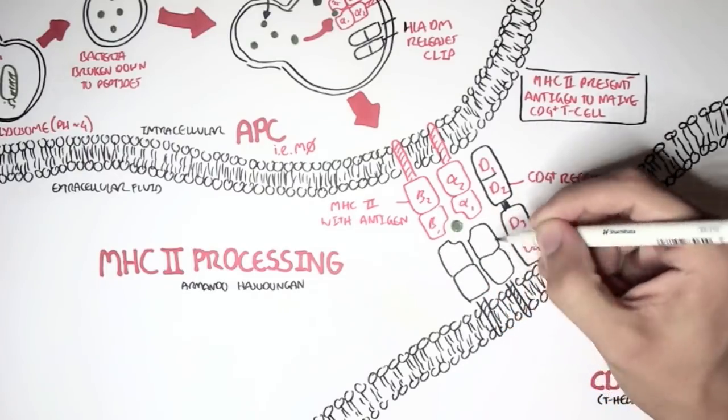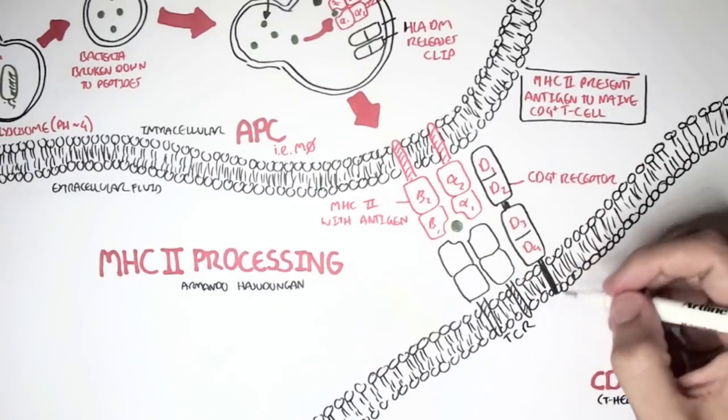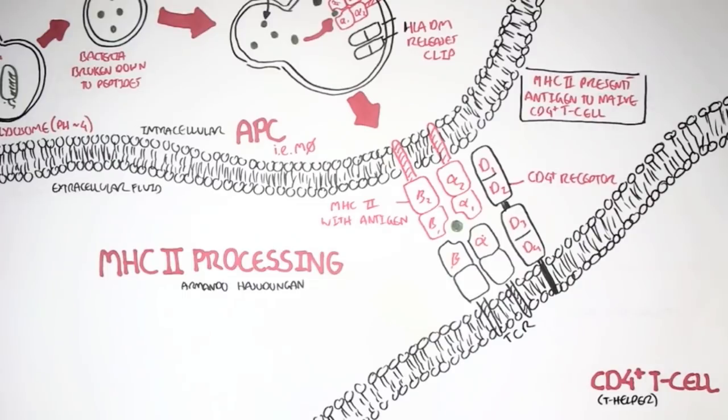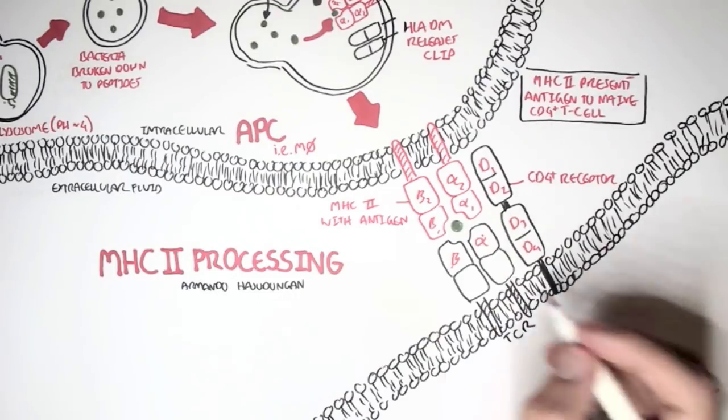If that's okay, the T cell receptor, TCR, will then check the antigen. The T cell receptor's binding groove also only fits to specific antigens. So let's just say in this case, the TCR can fit to this antigen being presented by the MHC class II.